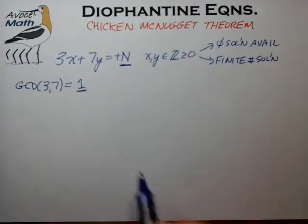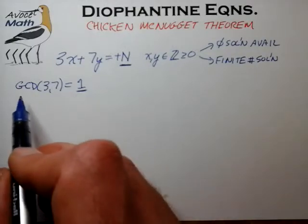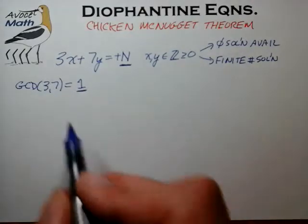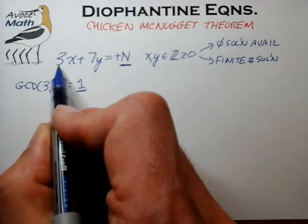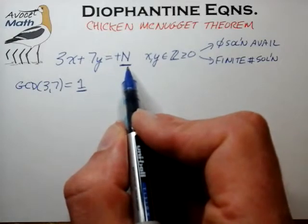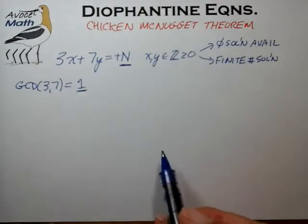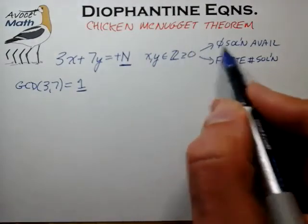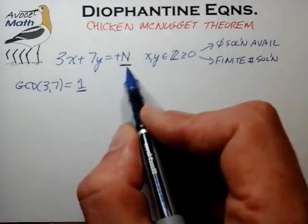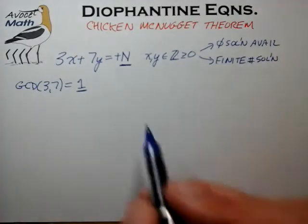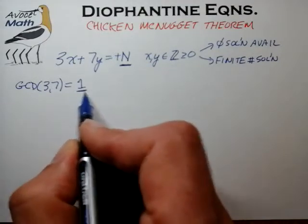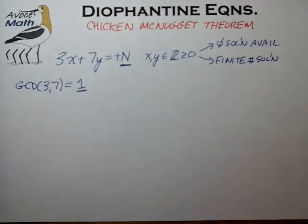The reason we make this additional requirement is because if the greatest common divisor was equal to something greater than 1 — say 2, for example, with coefficients of 4 and 6 — then for any n that is odd, there won't be a solution. In essence, the set of n giving rise to no solution would be an infinite set, as would the set giving rise to finite solutions. That's not a very interesting case, but when we constrain the problem to greatest common divisor of 1, we find a more interesting set to examine.